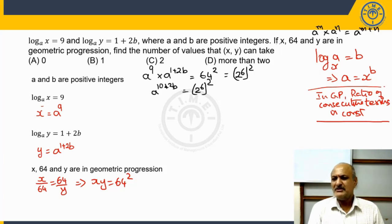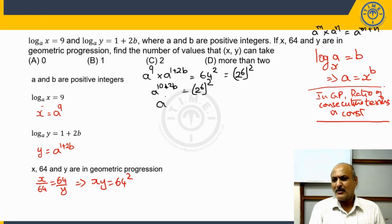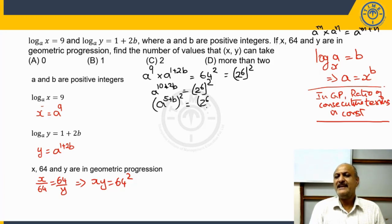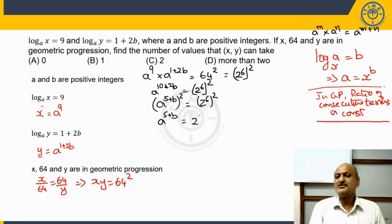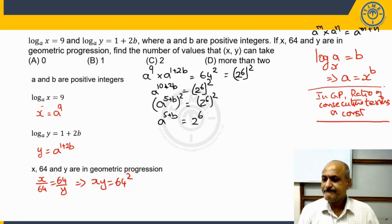Taking 2 as a common factor, 10 plus 2b equals 2 times (5 plus b). So we can write the equation as [a raised to the power of (5 plus b)] squared equals [2 raised to the power of 6] squared. Simplifying, we get a raised to the power of (5 plus b) equals 2 raised to the power of 6.